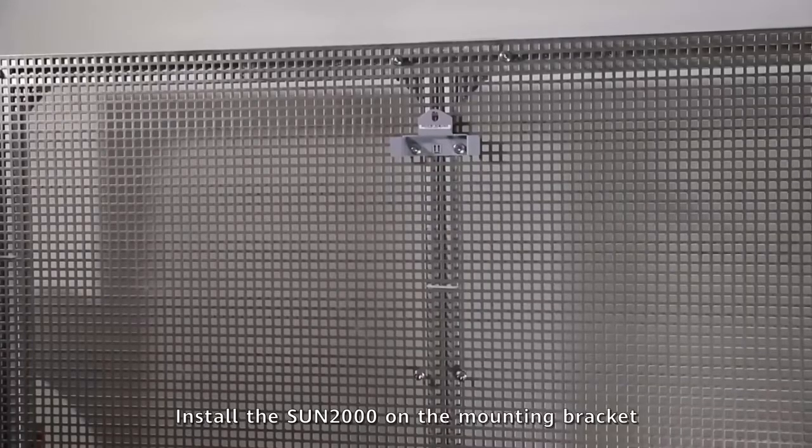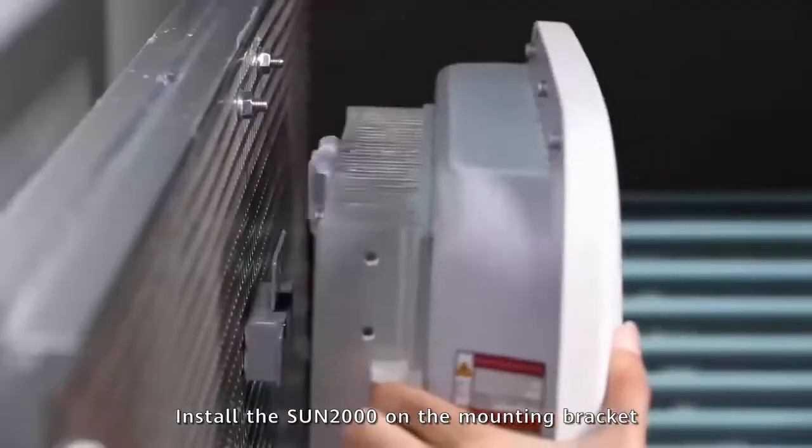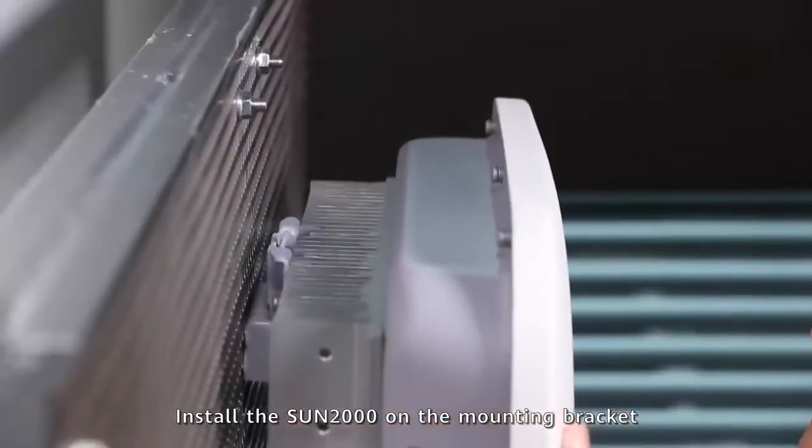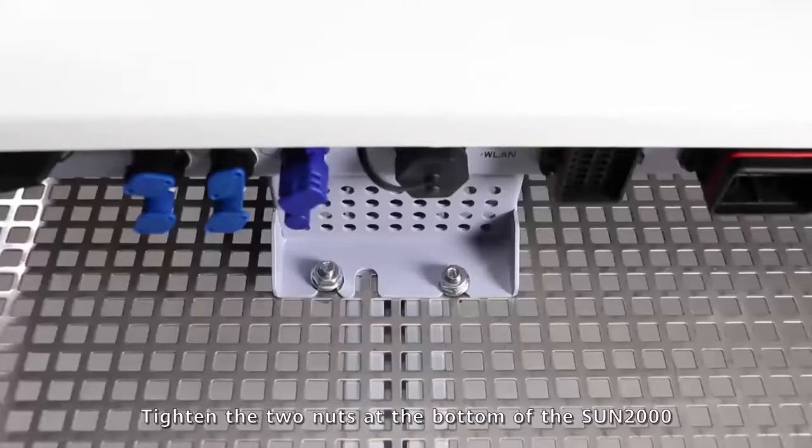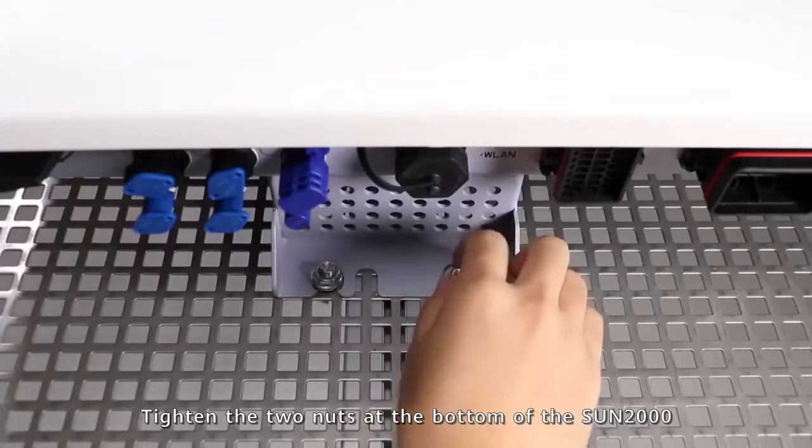Install the SUN2000 on the mounting bracket. Tighten the two nuts at the bottom of the SUN2000.